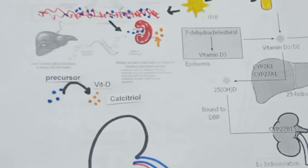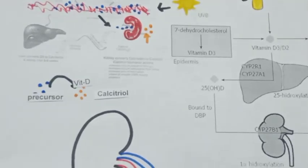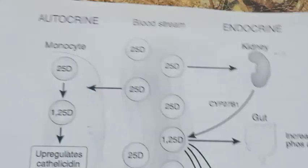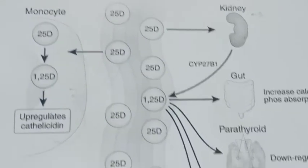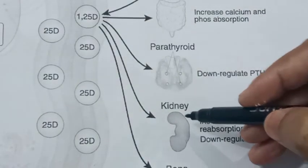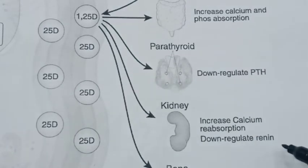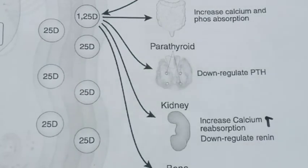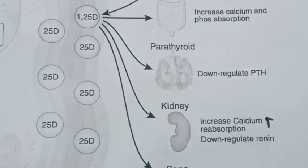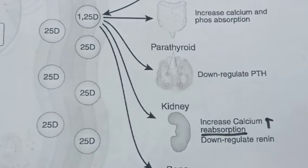Calcitriol is the active form of vitamin D. Calcitriol increases the calcium level in the blood by increasing the reabsorption of calcium from the kidney, because the basic functions of the kidney include filtration, reabsorption, and excretion. The absorption of calcium from the kidney cells is stimulated by calcitriol.